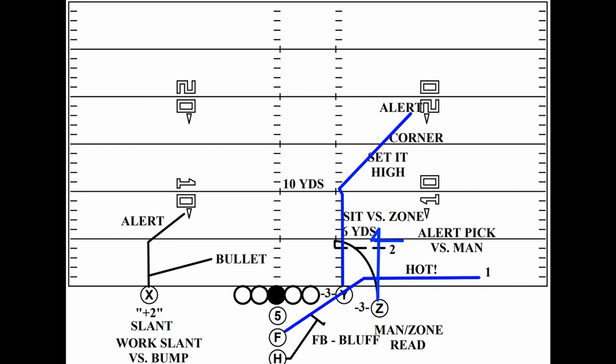Out of two receiver sets, or even single receiver sets, the outside receiver runs the snag as a rub, and the back or number 2 receiver runs to the flats to exploit the pick.